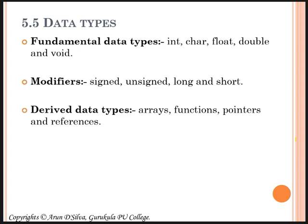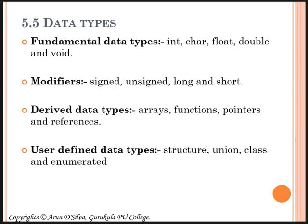The next is derived data types. Arrays, functions, pointers, and references are derived data types. If you want to create any array, you have to make use of a fundamental data type. Similarly for functions, pointers, and references — that is the reason we call these derived data types. The last category is user-defined data types. According to the user's requirements, he can create his own data type. This is possible in C++ by using structure, union, class, and enumerated types. We have already studied structures, and this year we are going to learn about classes.